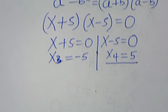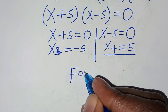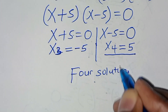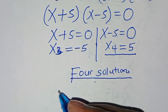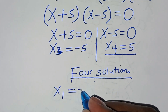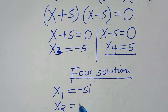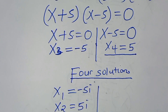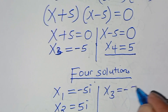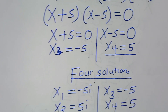This implies that we have four solutions: x₁ equals negative 5i, x₂ equals 5i, x₃ equals negative 5, and x₄ equals 5.